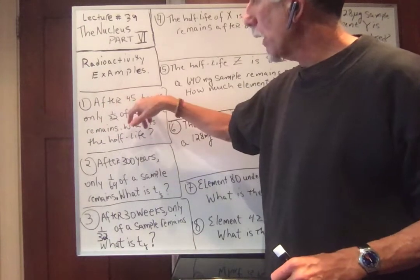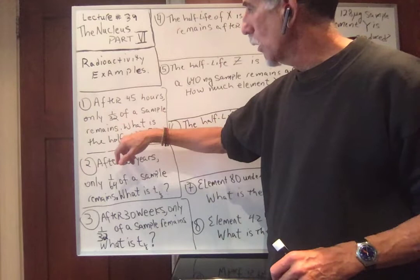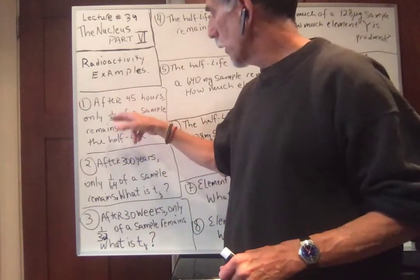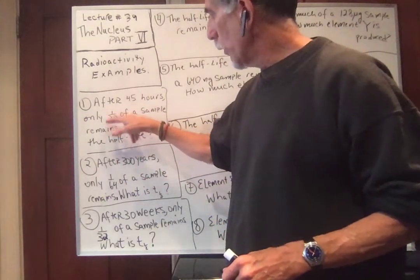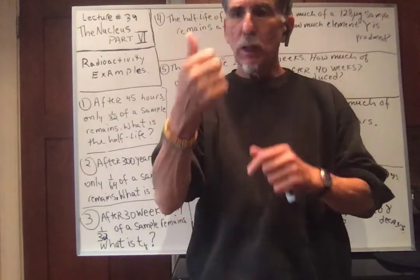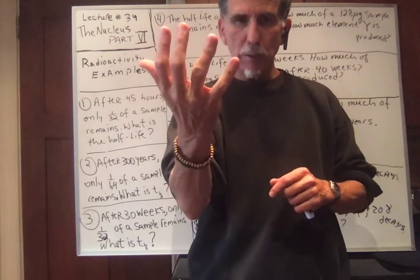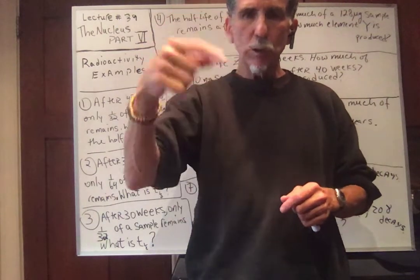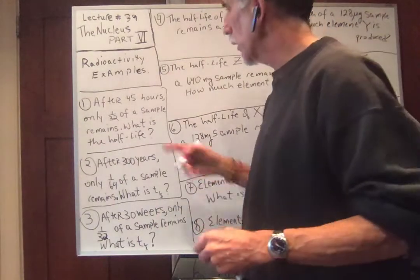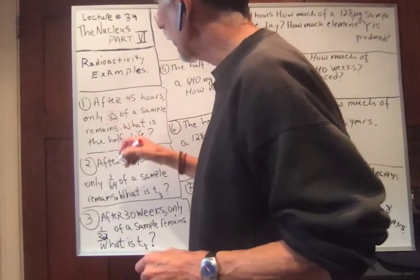After 45 hours, only 1/32nd of a sample remains. What is the half-life? 1/32nd means it decayed in half five times: 1/2 × 1/2 × 1/2 × 1/2 × 1/2. 1 over 2 to the 5th is 1/32nd, so that's 5 half-lives.